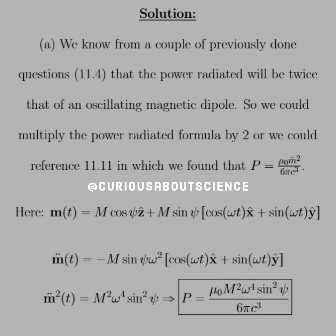So part A, we know from a couple of previously done questions, like in 11.4, that the power radiated will be twice that of an oscillating magnetic dipole. So we could multiply the power radiated formula by 2, or we can reference question 11.11,